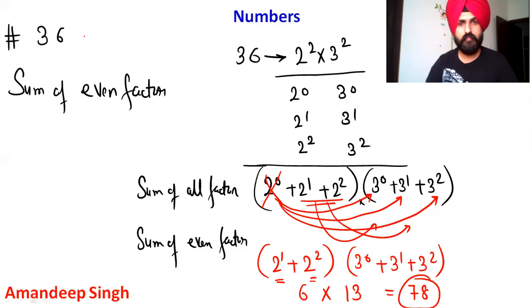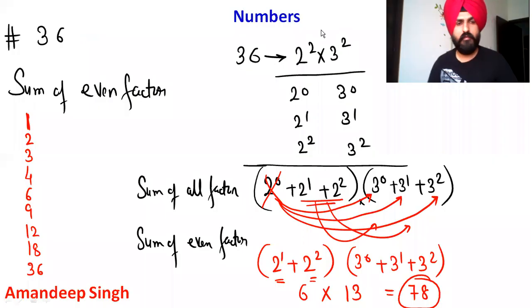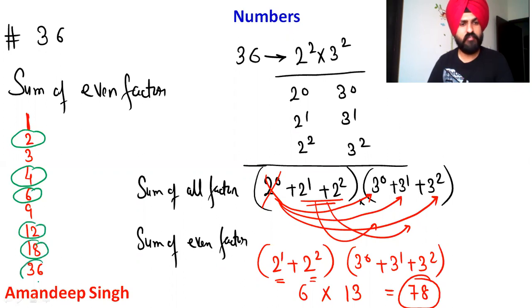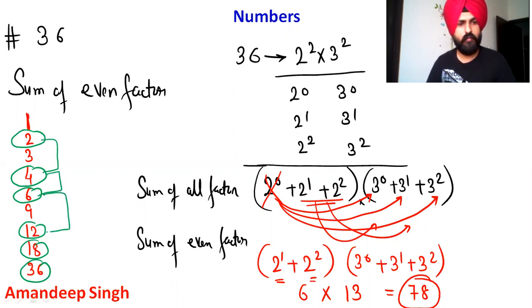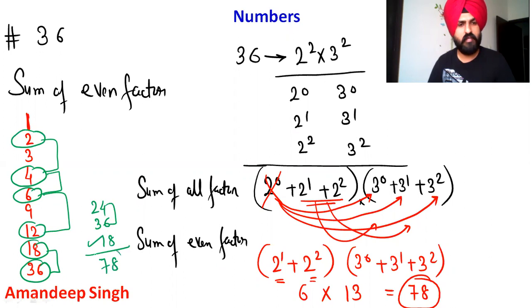Let's verify by listing the even factors of 36: 2, 4, 6, 12, 18, and 36. Adding them: 2 + 4 = 6, 6 + 6 = 12, 12 + 12 = 24, 24 + 18 = 42, 42 + 36 = 78. Yes, 78 is confirmed as the sum of all even factors.